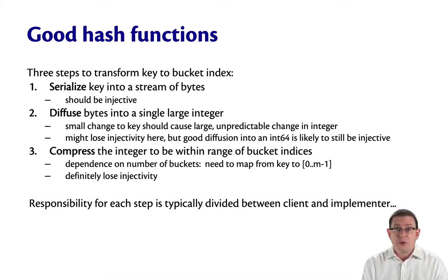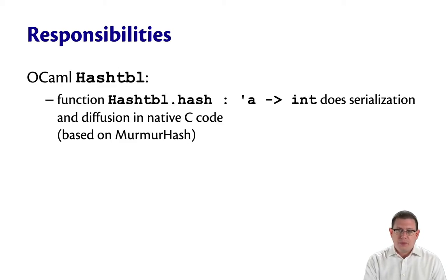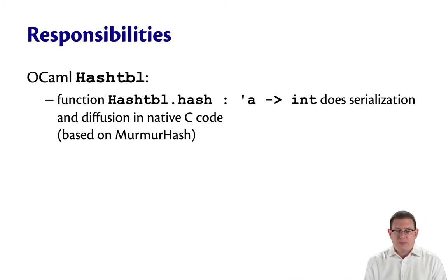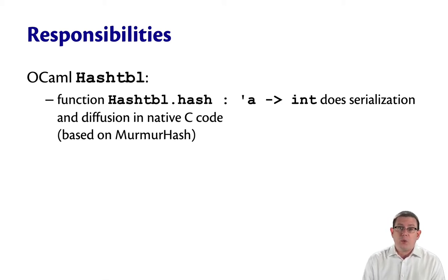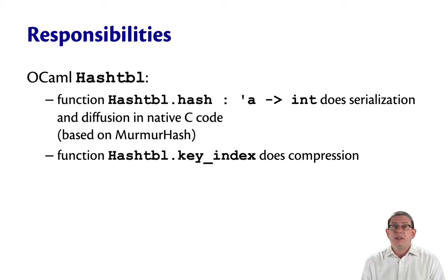Other libraries make other choices. OCaml's hash table module has a function Hashtbl.hash. You can use this to convert a value of any type into an int — it doesn't matter what that input type is. It does the serialization and the diffusion, converting to bytes and then converting those bytes to an integer in some native C code based on a well-known, well-studied hash. Another function called key_index does compression to convert it down to the small number of buckets.